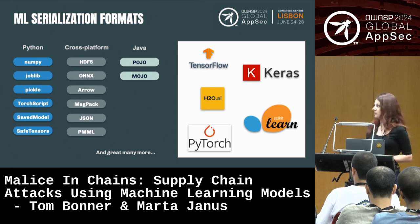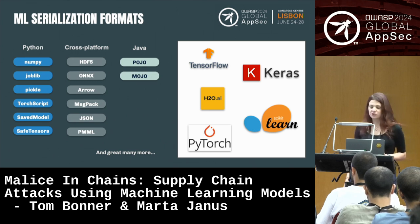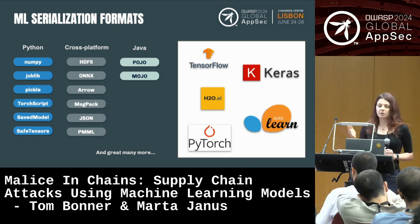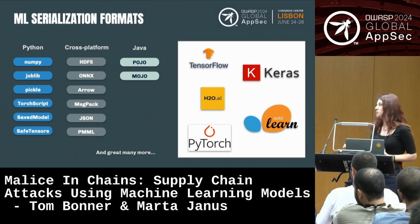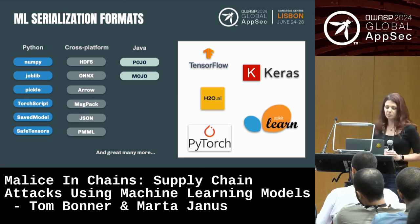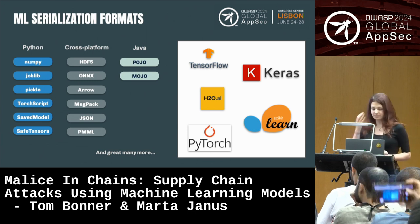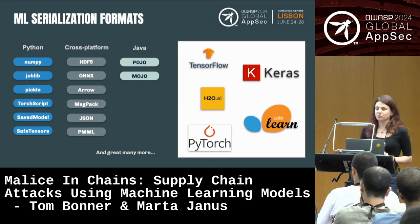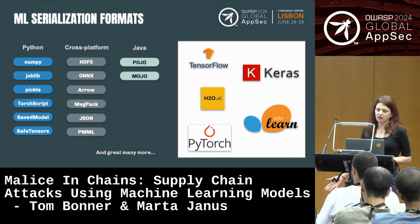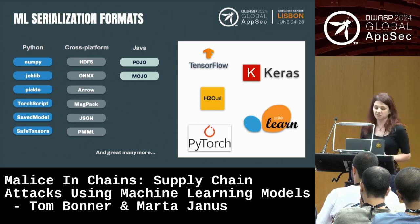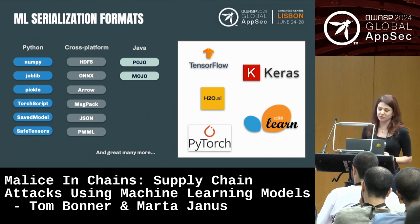A quick overview of machine learning serialization formats: there are very many of them, and each framework has its own preferred format. There are Python-based formats — NumPy, Joblib, Pickle, which was actually designed to store Python objects and not really with machine learning in mind. Then we have TorchScript, which is based on Pickle; SavedModel, which is a TensorFlow file format; and SafeTensors, which was designed with security in mind. Cross-platform formats include HDF5, ONNX, Arrow, JSON — JSON is probably right now one of the most secure. PMML is based on XML and has had its vulnerabilities in the past. There are also formats used specifically by Java-based frameworks.